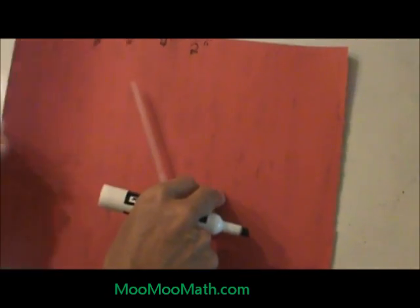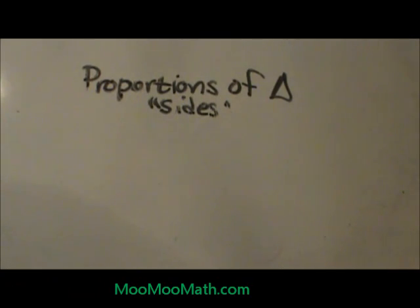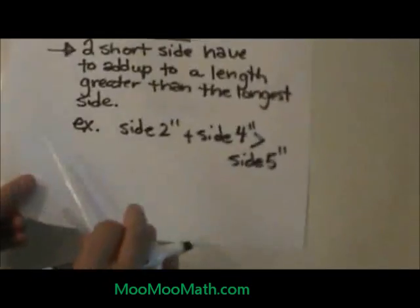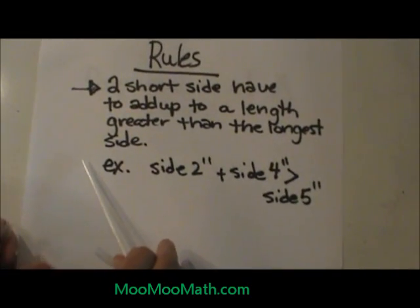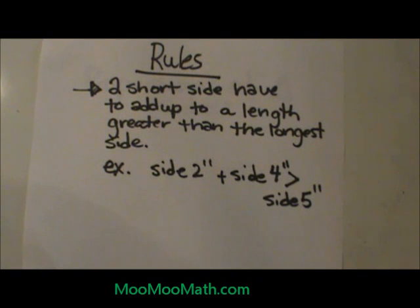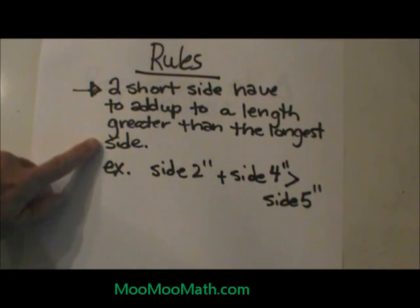So what are the rules for creating triangles? Let's look at the rules. The rules say that the two shorter sides have to add up to be longer, or greater than, the length of the longest side.